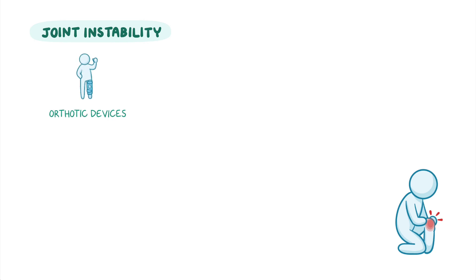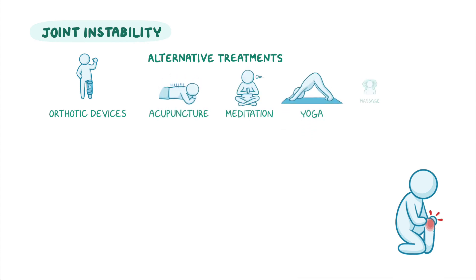For clients experiencing joint instability, the joint can be immobilized and protected using supportive or orthotic devices, such as braces and splints. Alternative treatments might also include acupuncture, meditation, yoga, massage, and heat application.